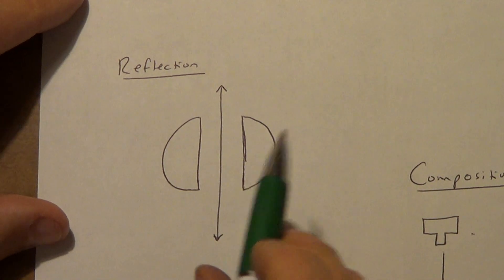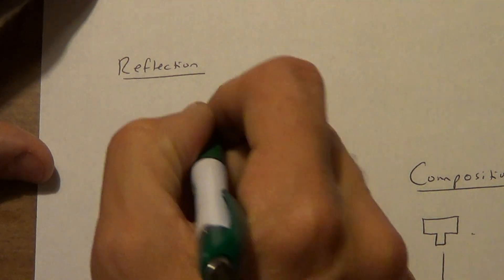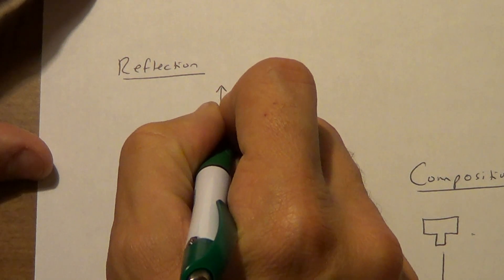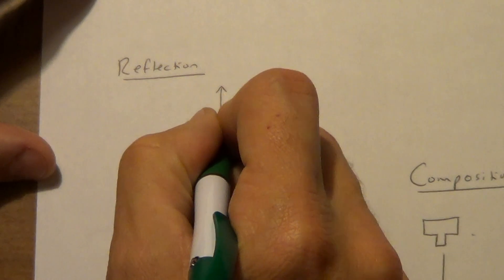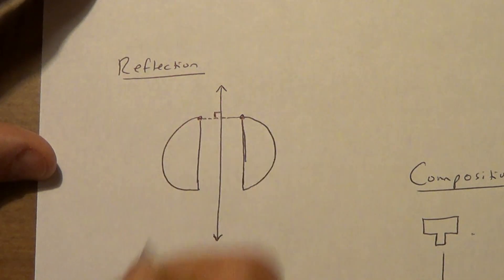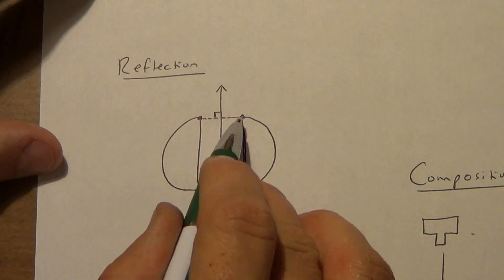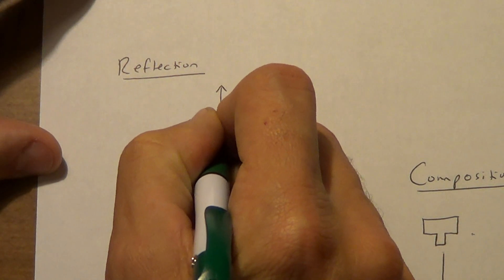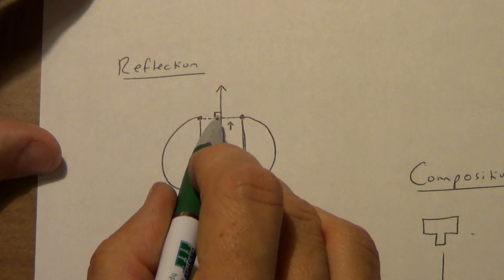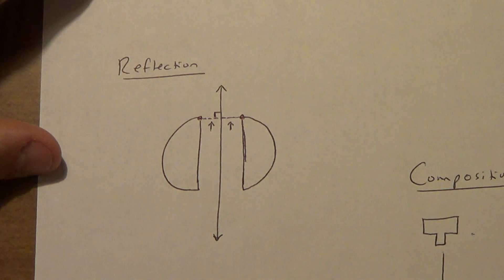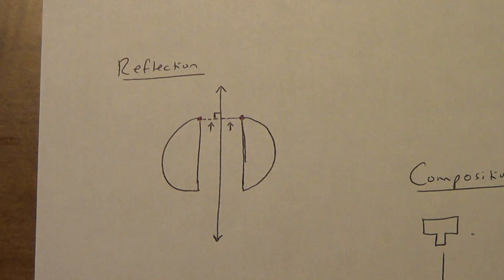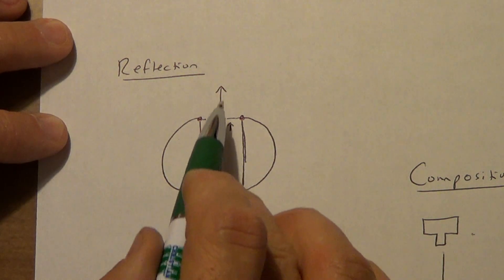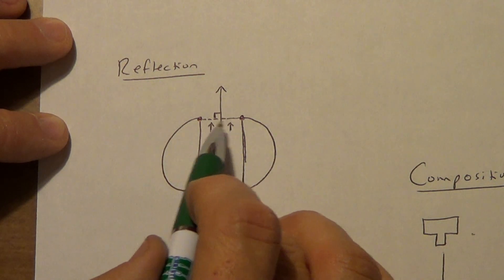A reflection: I have this shape, and this is my line. I reflect it across the line. If you pick any point on the original and connect it to the corresponding reflected point, that segment must be perpendicular to the line of reflection. And this distance on one side must be congruent to the distance on the other side — just like looking in a mirror. The line of reflection is the perpendicular bisector of that connecting segment.